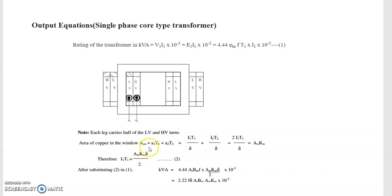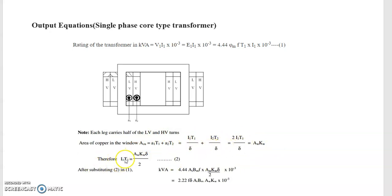This is how we calculate the area of copper in the window. A1·T1 = I1 / delta (current density), and similarly for the secondary. So the total copper area becomes 2·I1·T1 / delta = AW·KW. Therefore I1·T1 = AW·KW·delta / 2. Substituting this into the KVA equation, we get: KVA = 4.44 × AI × B_M × f × AW × KW × delta / 2 × 10⁻³. This is the output equation of the single phase transformer.